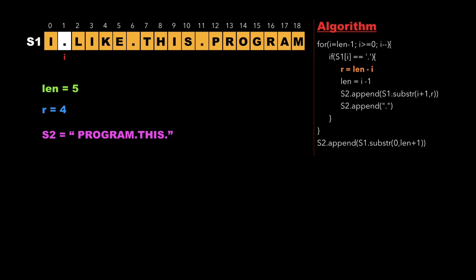We update length as i minus 1, which is 0, and append the substring from i plus 1 to r into s2, appending the word 'like', followed by a dot at the end.